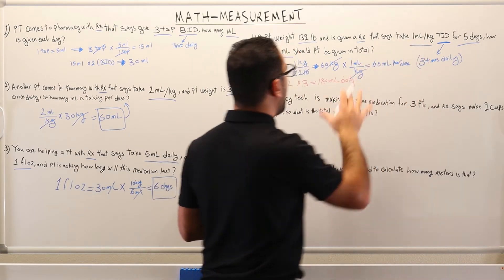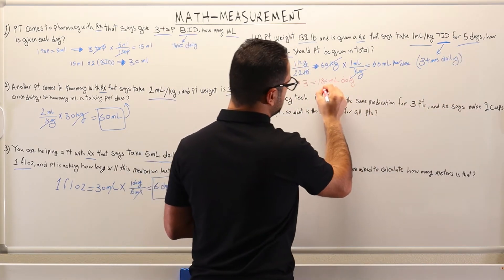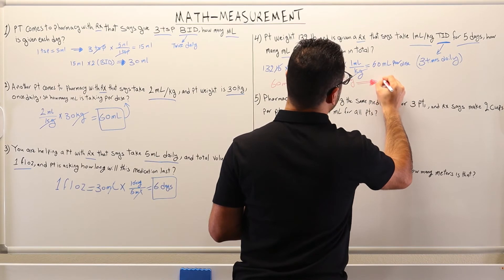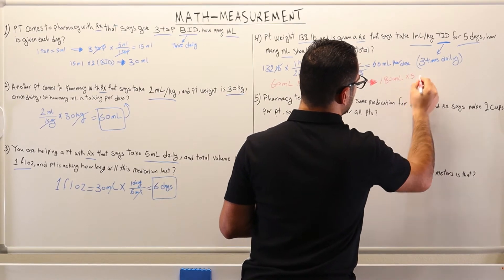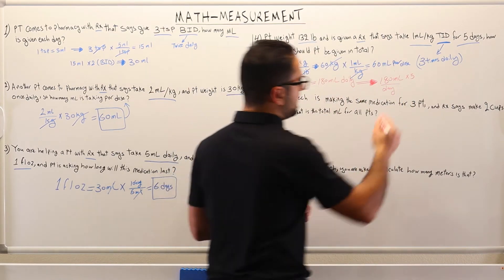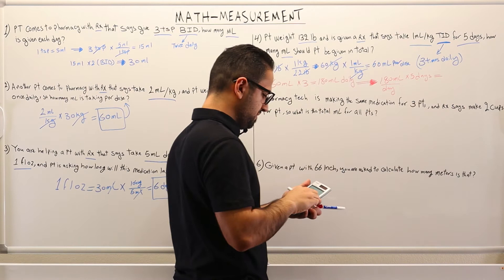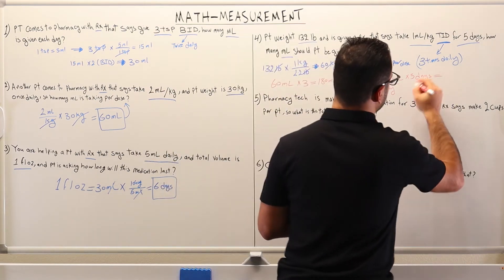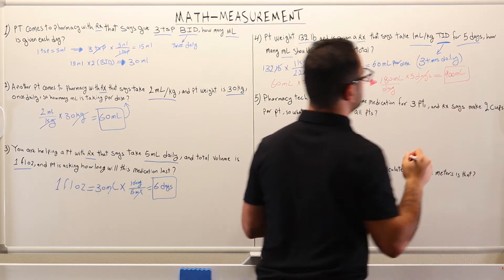The question is asking how many milliliters in total the patient is receiving for five days. We multiply 180 milliliters per day by five days. Canceling days, 180 times five gives us 900 milliliters. So 900 milliliters is the answer to this question.